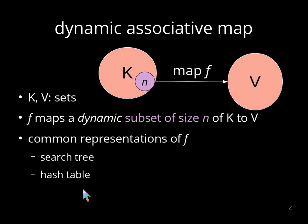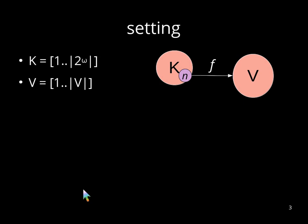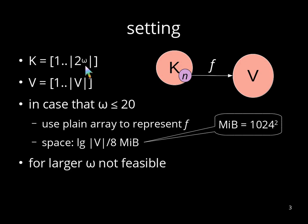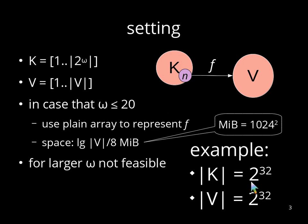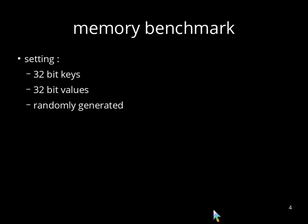We focus in this talk on the latter one. In detail, we focus on keys and values whose domains are integers. In particular, we want that a key can be represented in omega bits. Now, if omega is at most 20, we can use a plane array to represent f. This solution becomes infeasible whenever omega becomes large. So in this talk, we focus on large omega, like 32 for the keys and 32 bits for the values.